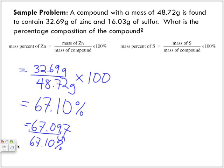We could just subtract from 100 to find the other percentage, but we're actually going to calculate it. We've got 16.03 grams of sulfur divided by 48.72 grams.